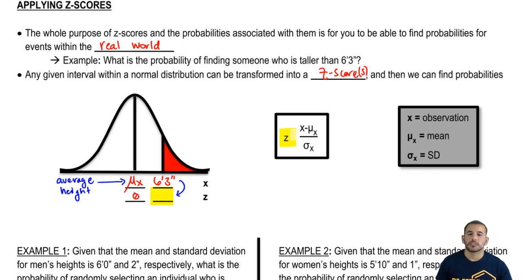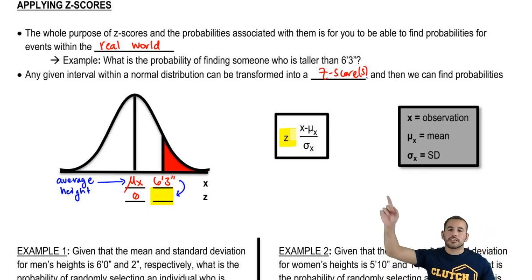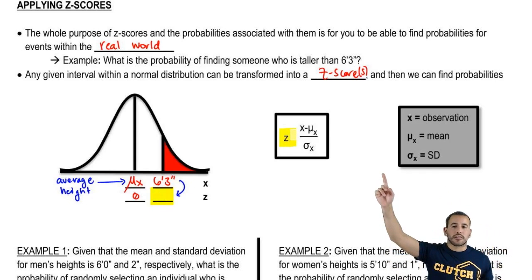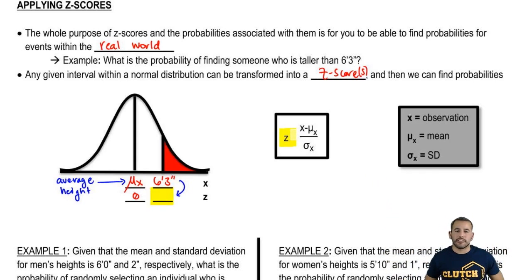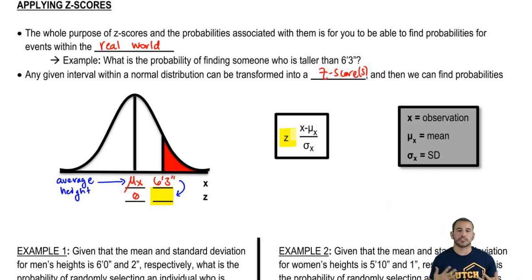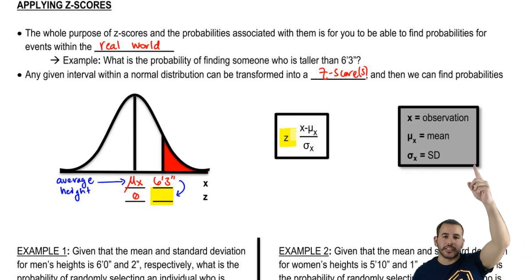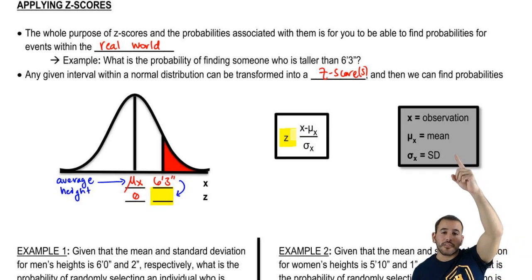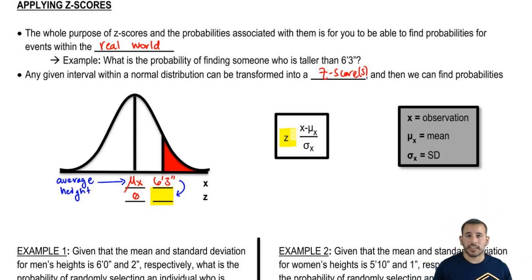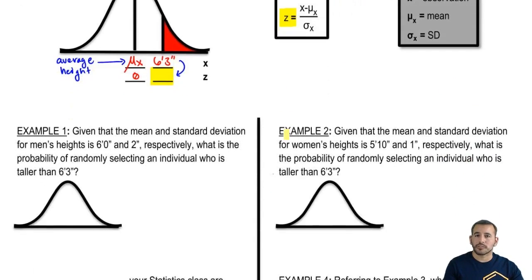Once we have an average height, we have our x-value of 6'3", and then we divide by the standard deviation. The mean and standard deviation are going to be given to you. So x is the observation, μ (mu) is the mean of those observations, and σ (sigma) is the standard deviation. Let's go ahead and do some problems.